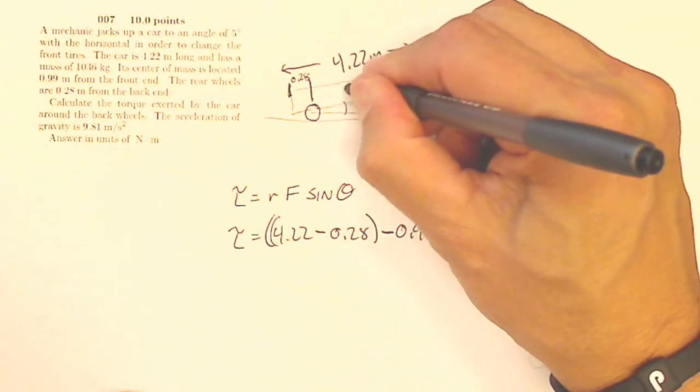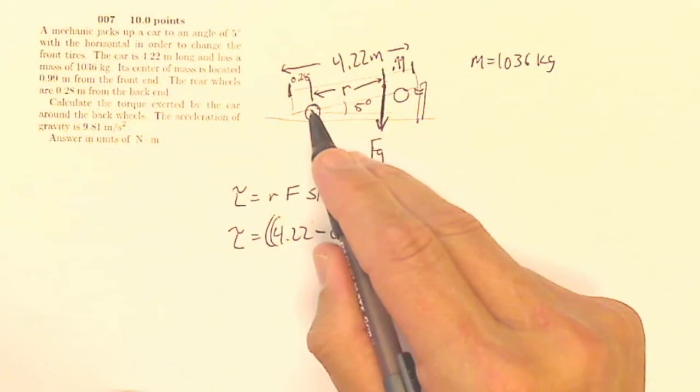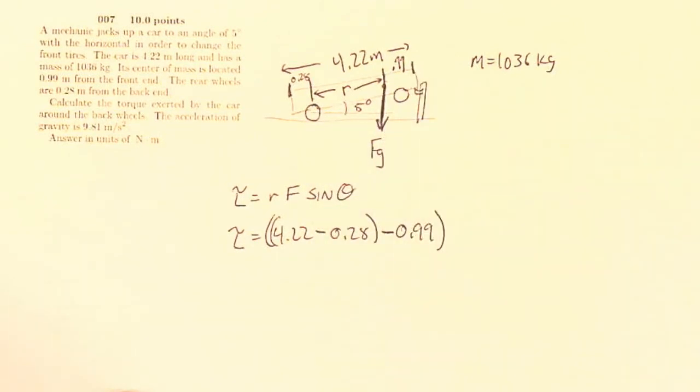So that is my R. It's all of this. So I'm looking for this distance here as my radius. Because that's how far away the back is from the center of gravity of the car, the center of mass of the car.